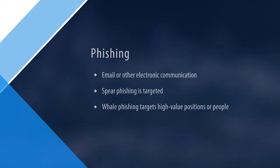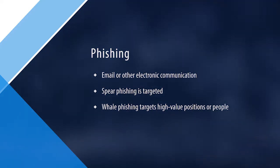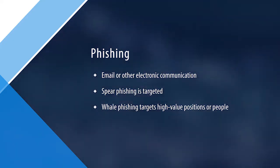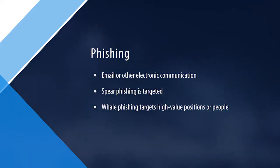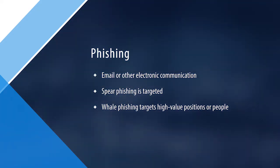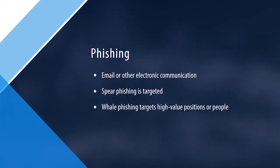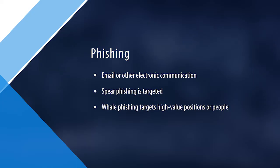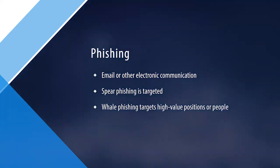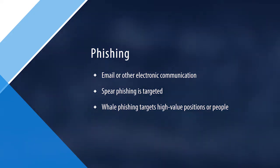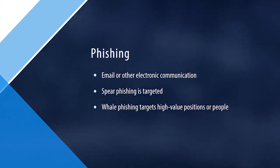Phishing is when an attacker uses email or other electronic communication to get a person to perform an action. When a phishing email is targeted or tailored to a specific person, it is referred to as spear phishing, because the request includes detailed or specific information that makes the request appear legitimate. As a result, spear phishing is more likely to be successful.